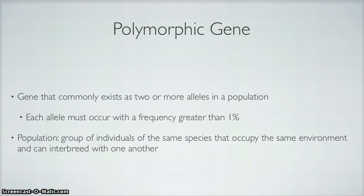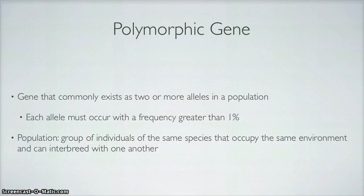Population. Because I will be using the term population a lot throughout chapter 24, it's good to know what it means. A population is a group of individuals of the same species that occupy the same environment and can interbreed with one another — a lot like how humans are.